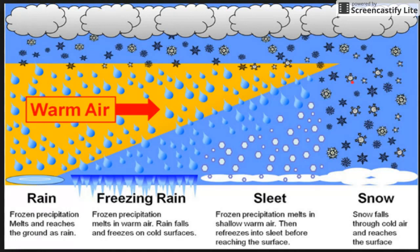And this is how snow forms — when there are no warm layers, and it just falls right through. The snow goes with no problem, no warm air, and hits the ground as snow.